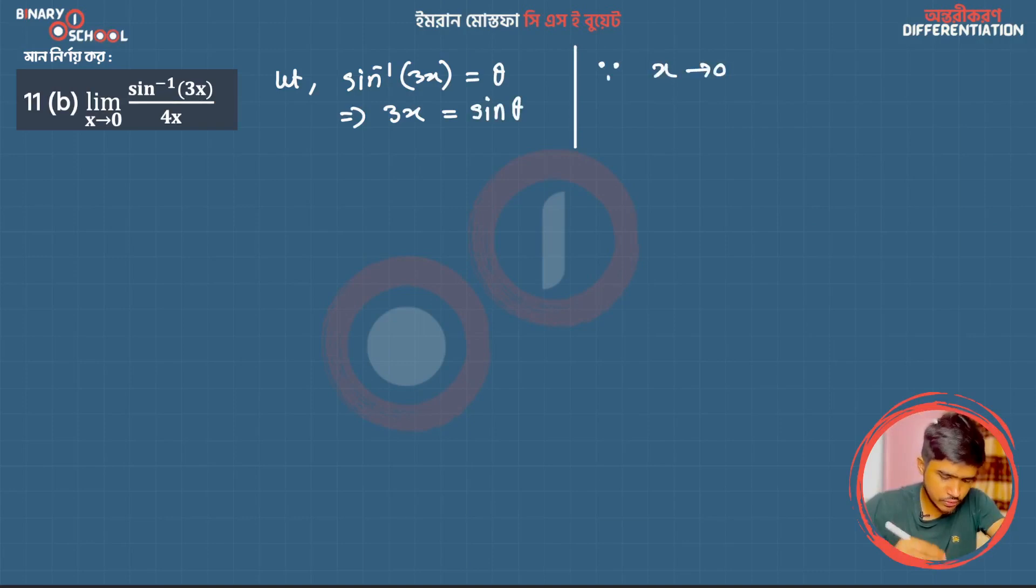Now when x tends to 0, since x equals sin theta, we have sin theta tending to 0. When sin theta equals 0, theta equals 0. So the limit changes: as x tends to 0, we can write it as limit theta tends to 0.